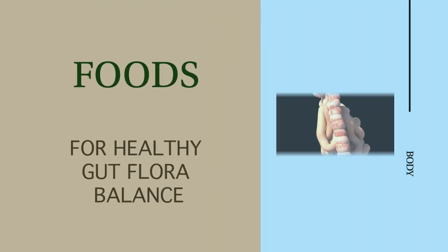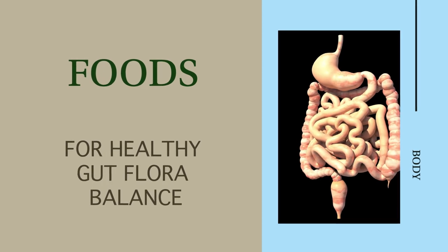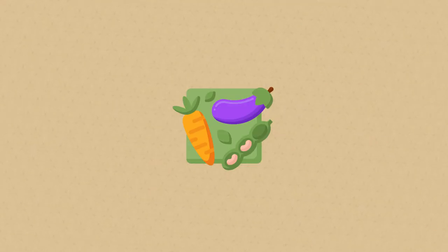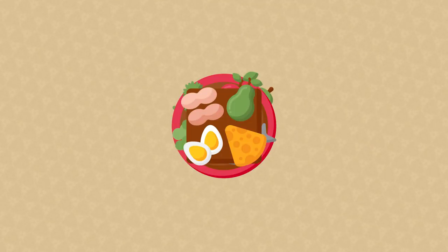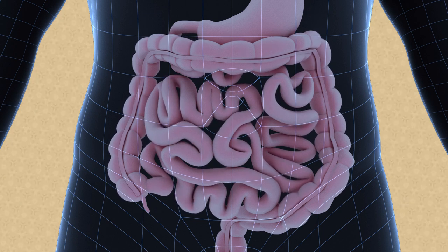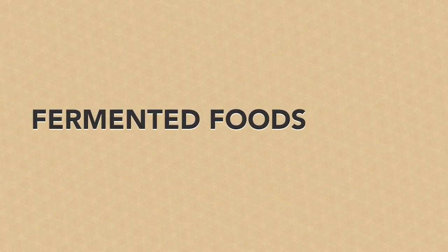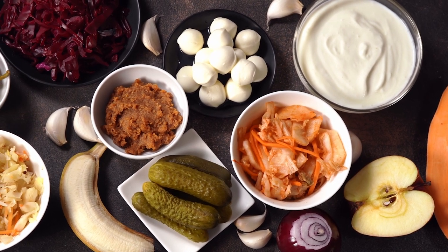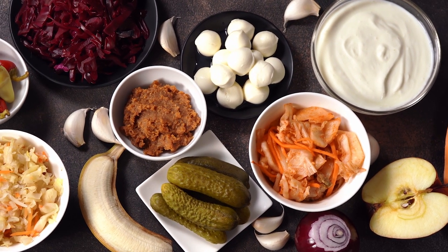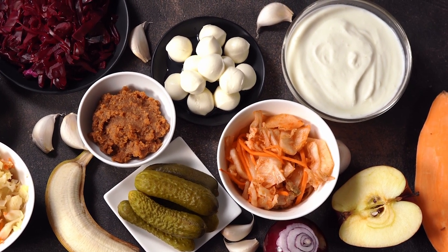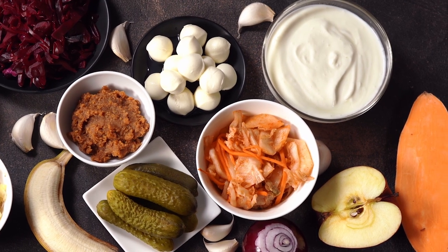Foods that help maintain a healthy gut flora balance. Maintaining a healthy gut flora balance is essential for the proper working of most processes taking place in the body. By making wise food choices, you can help stimulate the growth of beneficial bacteria in your gut. Fermented foods — such as sauerkraut, kimchi, kefir, yogurt, and pickles — are filled with probiotic bacteria that are essential for gut health. They help stimulate the growth of beneficial bacteria in your intestines and promote a healthy balance of gut flora.